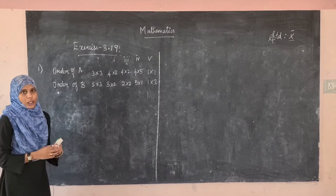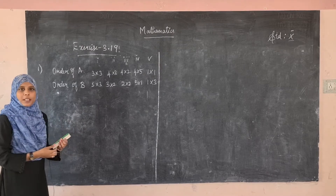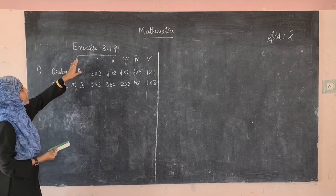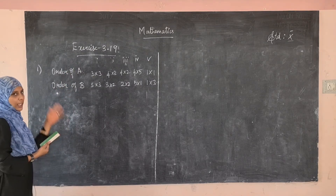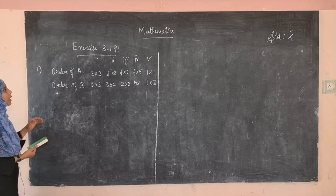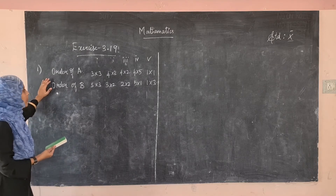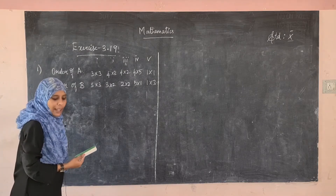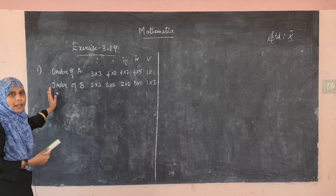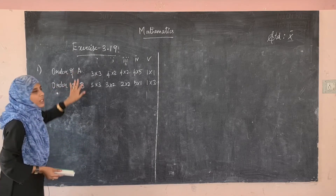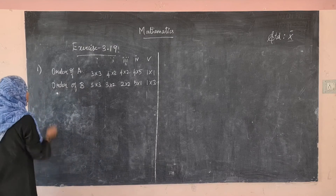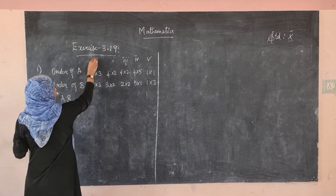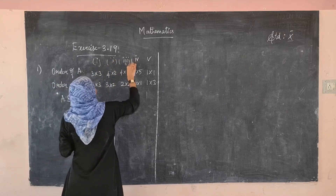Hello students, welcome back to our class. In the last class we have seen multiplication of matrices. In today's class we are going to solve problems in Exercise 3.19 regarding the multiplication of matrices. In the first sum, they have given the order of A and order of B, and we have to find the order of the product matrix AB. For five subdivisions they are given here.